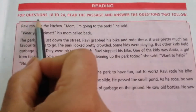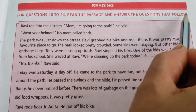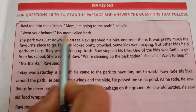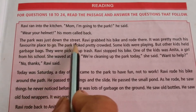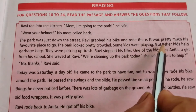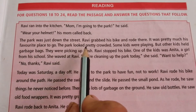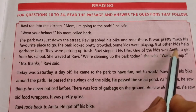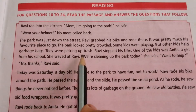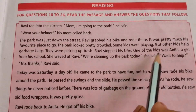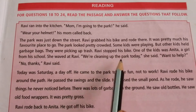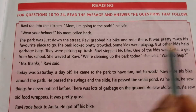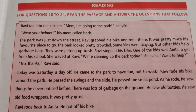Next topic is reading. For questions 18 to 24, read the passage and answer the questions. Ravi ran into the kitchen. 'Mom, I am going to the park,' he said. 'Wear your helmet,' his mom called back. The park was just down the street. Ravi grabbed his bike and rode there — it was pretty much his favorite place to go. The park looked pretty crowded. Some kids were playing, but other kids held garbage bags and were picking up trash.